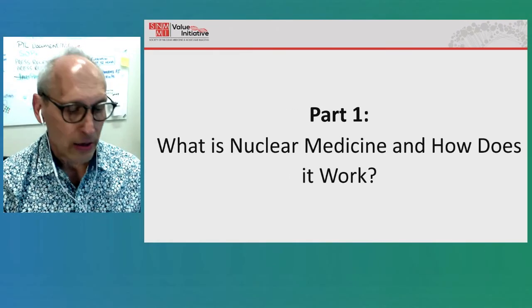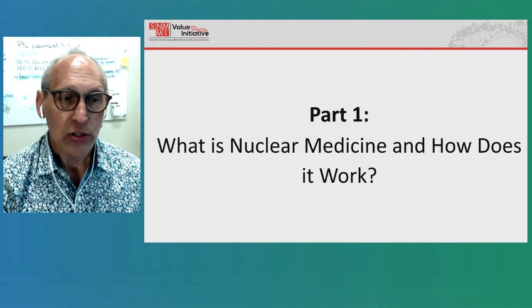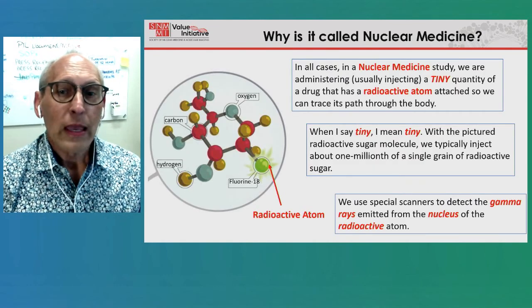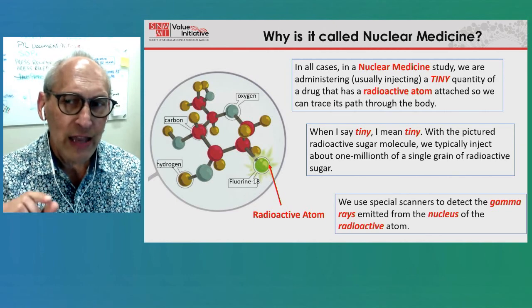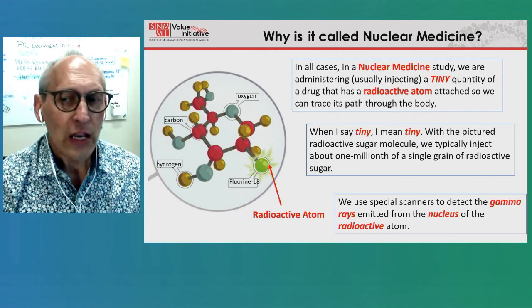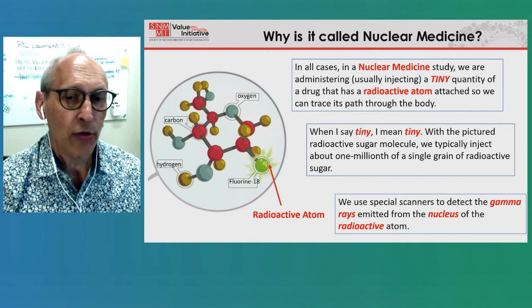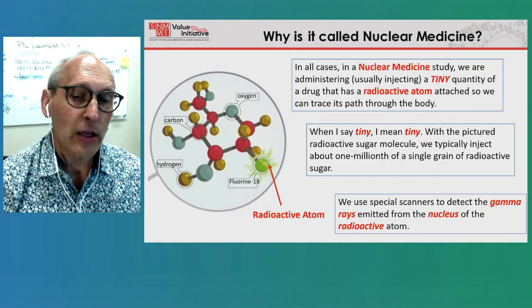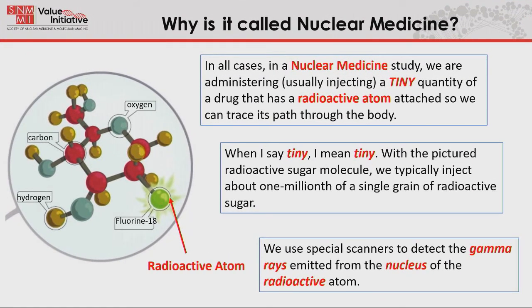In all cases when we do a nuclear medicine study, we are administering a tiny quantity of a drug that has a radioactive atom attached so we can trace its path through the body. What you see here is a glucose molecule that happens to have fluorine-18, a radioactive atom, attached. This is like my kids — they carry around cell phones and I can track where they go all over town because the cell phone is transmitting radio waves. Similarly, when we get radioactive decay, we can locate where that molecule is in the body. So we are tracing where the glucose goes over time.